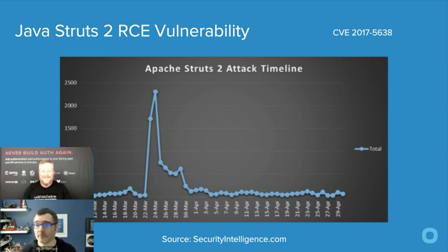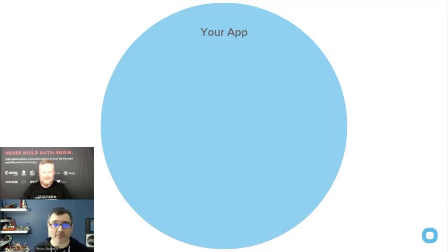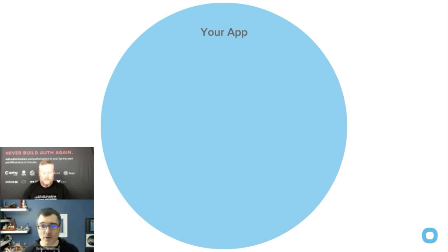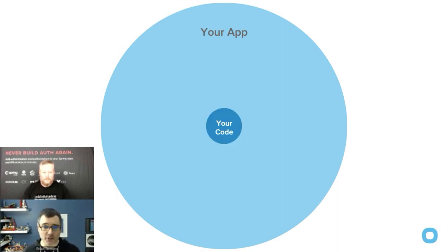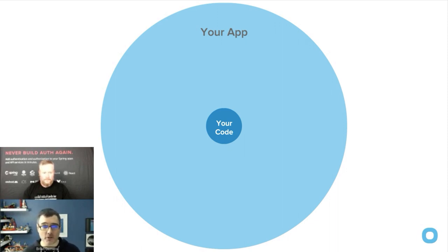Your whole application — your code, your dependencies, everything inside. However, the little dot in the middle is what's actually your code. In a very real sense, your dependencies are more important than the code you write because it's a bigger surface area. Our code is standing on the shoulders of giants.